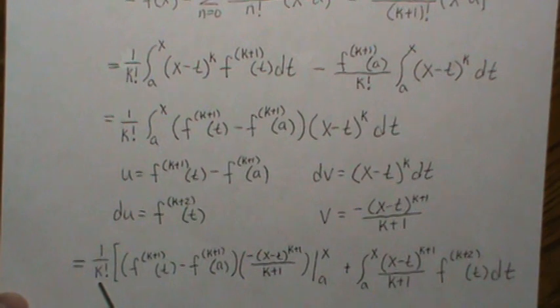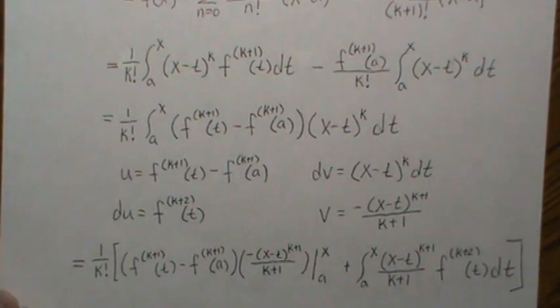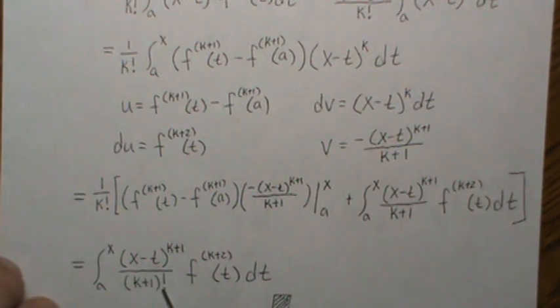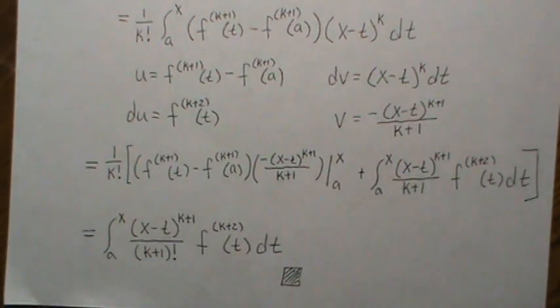Now don't forget about this k factorial, one over k factorial, because it goes into both of them. Then when we look at what's left is we take the k plus one to get k factorial, and then it's the integral of this. And that's actually what we wanted to show. So we're done. So it is true the remainder can be represented as an integral.